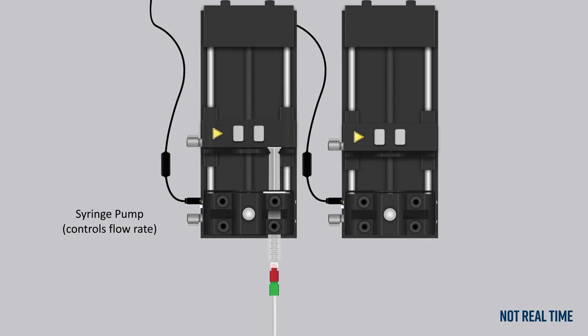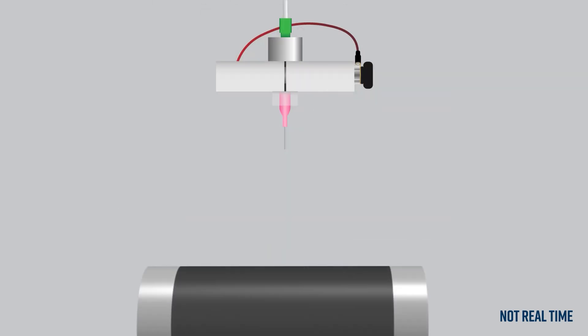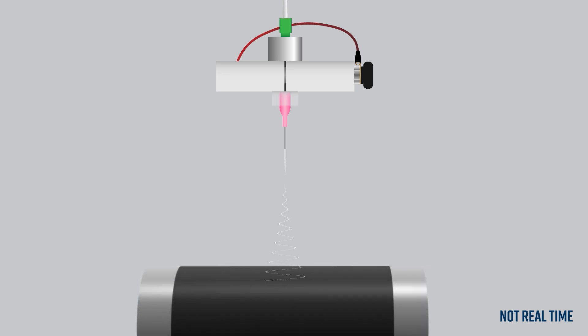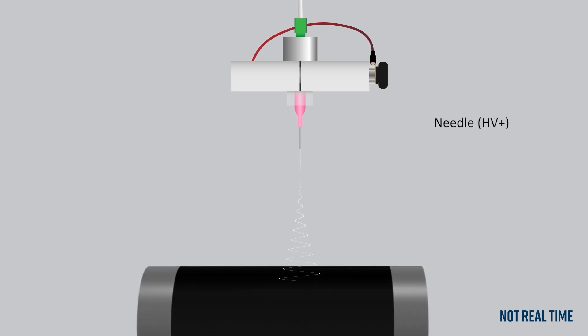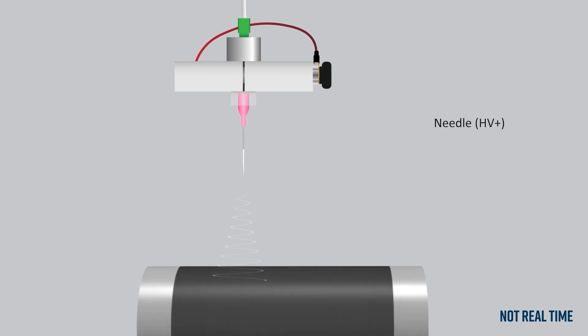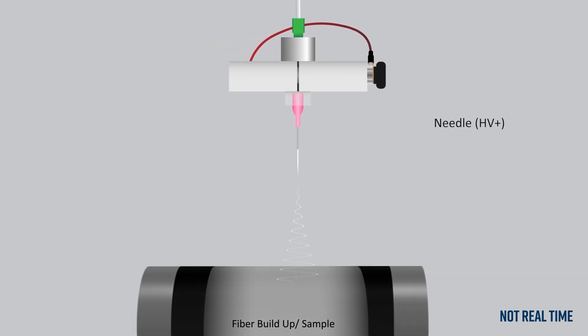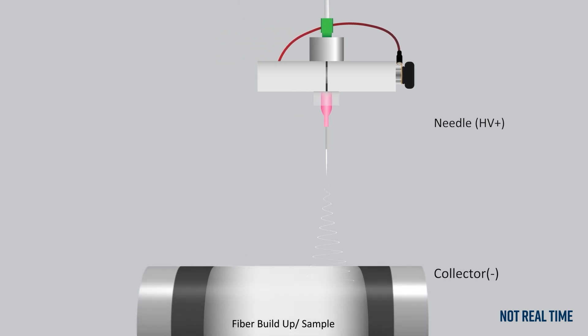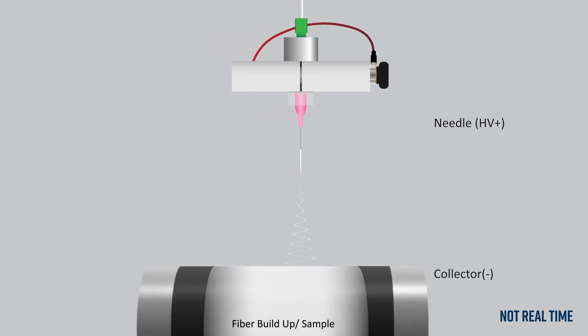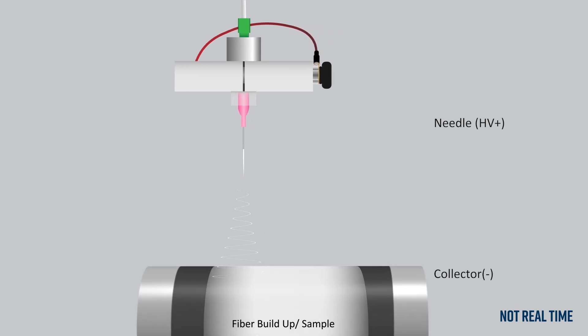Next, a syringe pump or other solution supply is necessary to control the rate of flow of your polymer solution. Then, we need a spinneret or a needle. This is where the magic happens and your polymer solution is electrically charged and ejected. Finally, we need a collector to complete our configuration. This is the grounded or negatively charged surface where the nanofibers will be deposited.